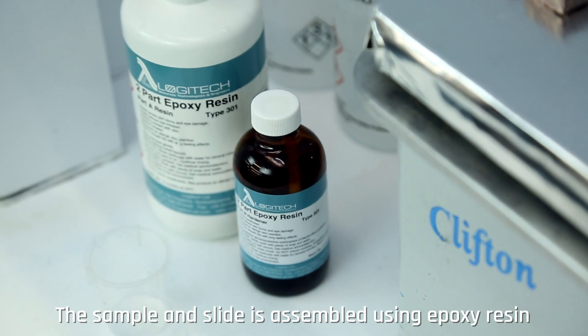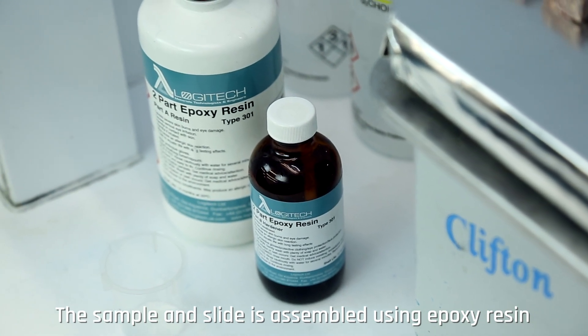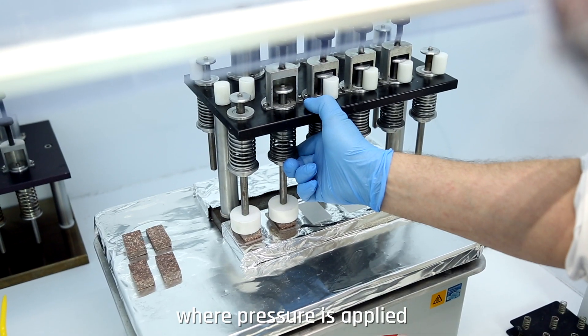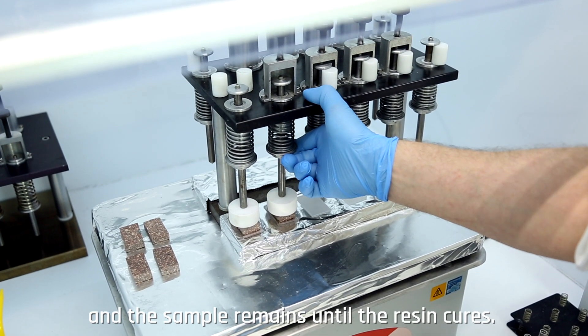The sample and slide is assembled using epoxy resin and is placed within the jig under a loading piston, where pressure is applied and the sample remains until the resin cures.